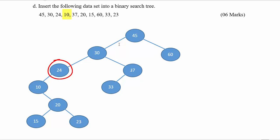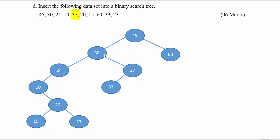The next number is 10 — 10 is less than 45 (left), less than 30 (left), less than 24 (left). Then 37 — 37 is less than 45 (left), but 37 is greater than 30, so it should go to the right-hand side of 30.